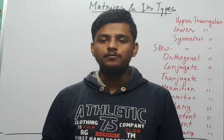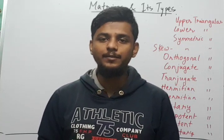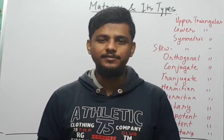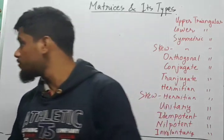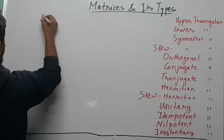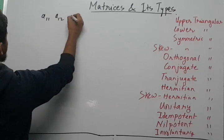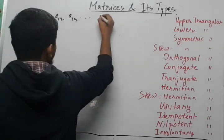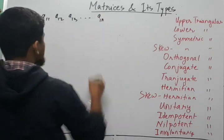Before we start with the types of matrices, we need to understand what a matrix is. A matrix basically has M×N elements, meaning it has M rows and N columns. In that case, this is a matrix of order M cross N. The format is: a₁₁, a₁₂, a₁₃ up to a₁ₙ for the first row.